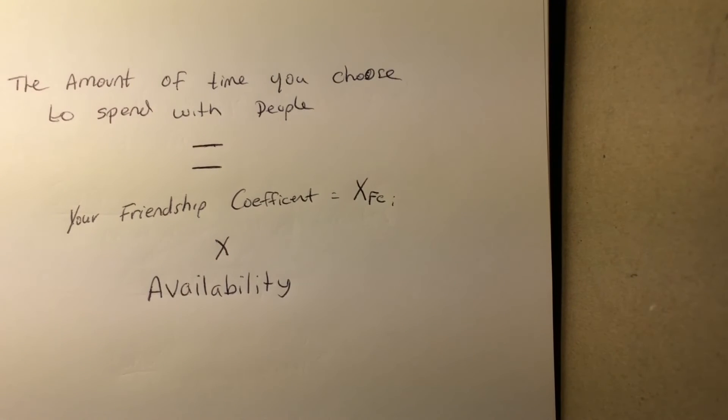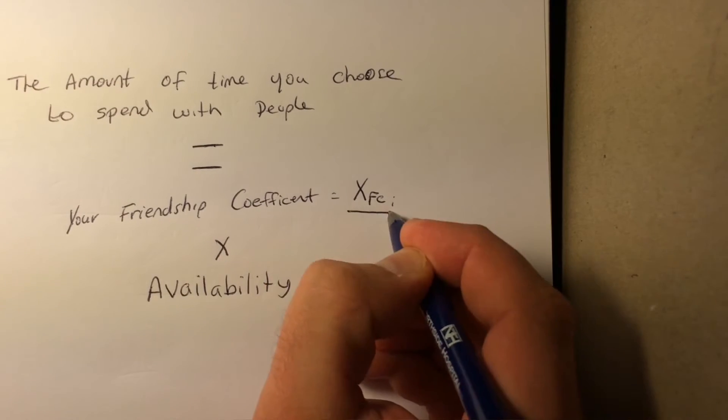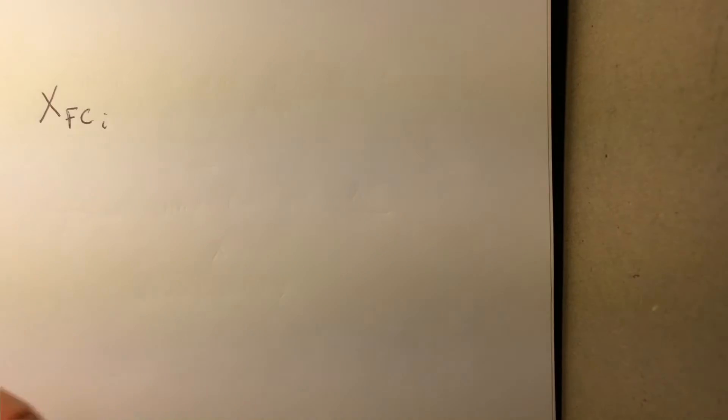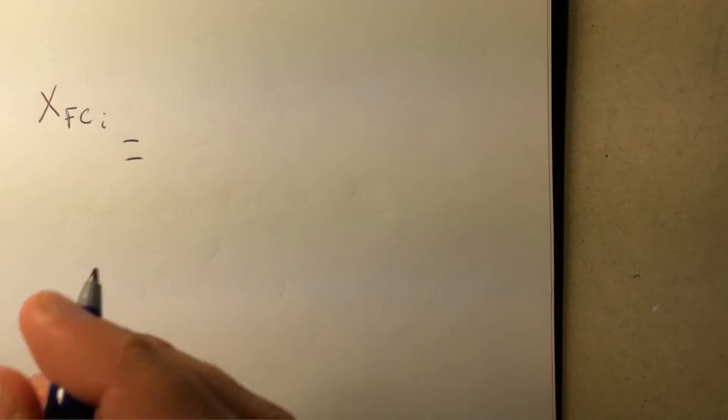In other words, you might have a great friend, but if they're never available, you'll never hang out with them. So then one must ask, well, how do you calculate one's friendship coefficient?